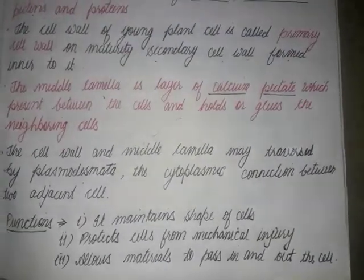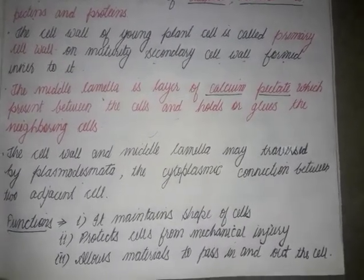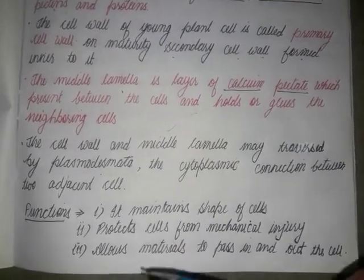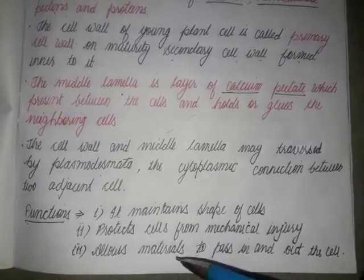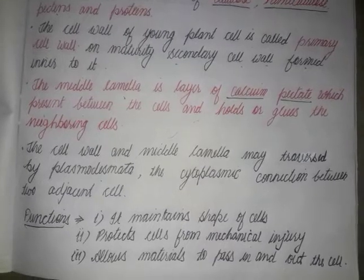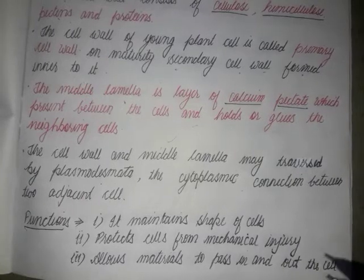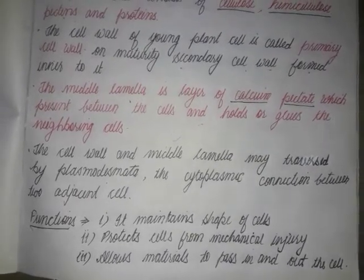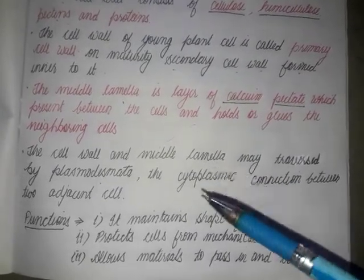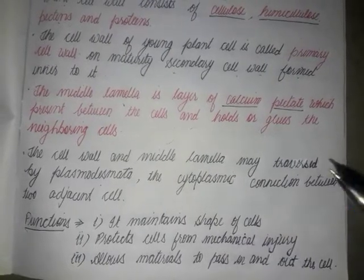Now let's talk about the functions of the cell wall. The first function is that it maintains the shape of the cell. In the case of animals, they have a characteristic skeletal system which provides shape to the body of the organism.